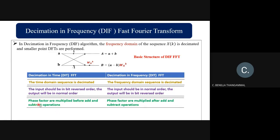Another major difference is that in DIT the twiddle factors are multiplied before the add and subtract operation, but in DIF the twiddle factor is placed after the butterfly structure. Those are the key differences between Decimation in Time and Decimation in Frequency algorithm.